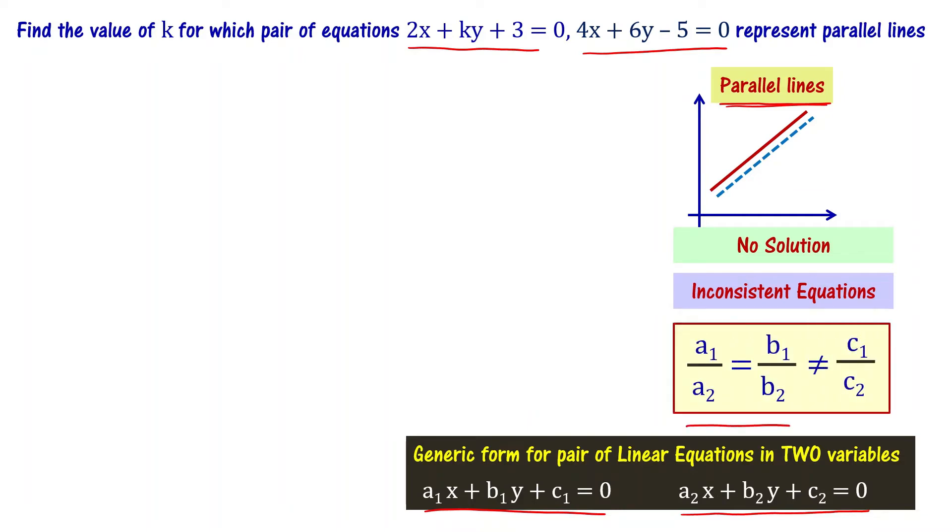a1 by a2 equal to b1 by b2, but that is not equal to c1 by c2. Now, let us take these equations and find what are the values of a1, b1, c1 and a2, b2, c2.